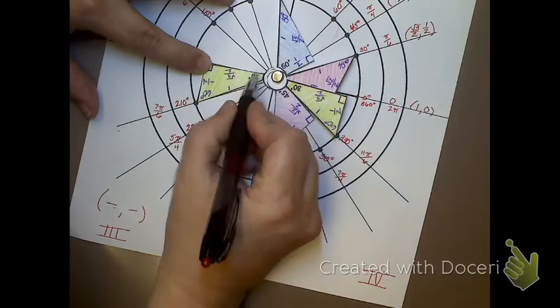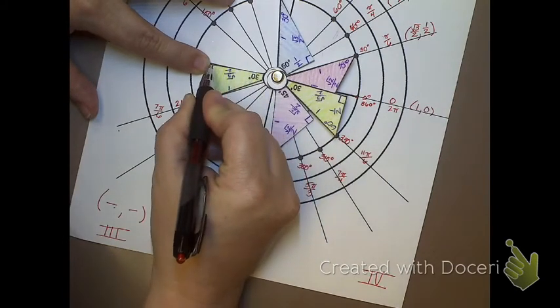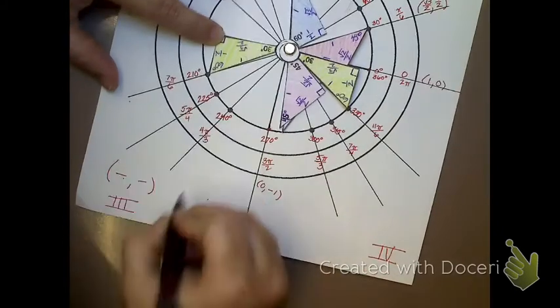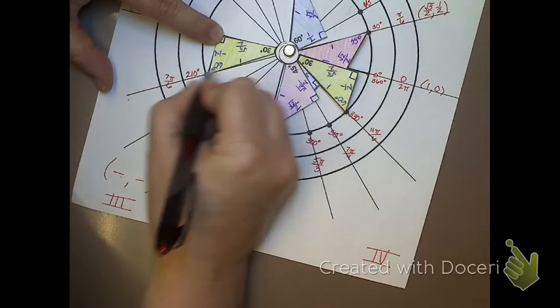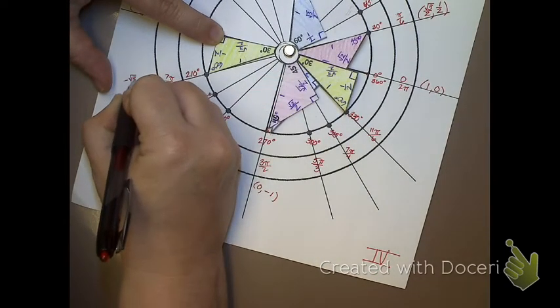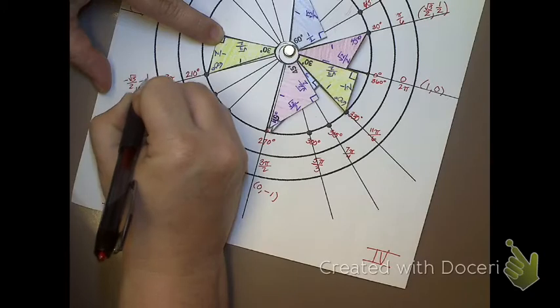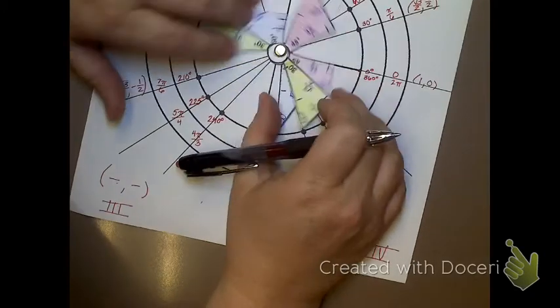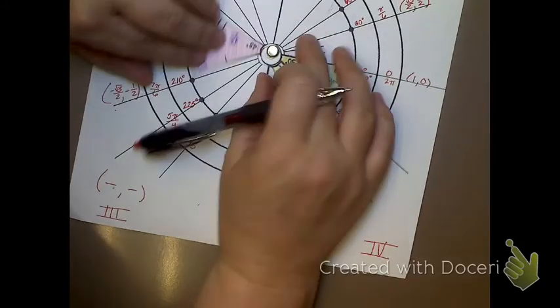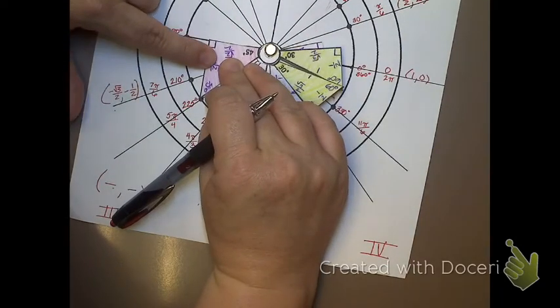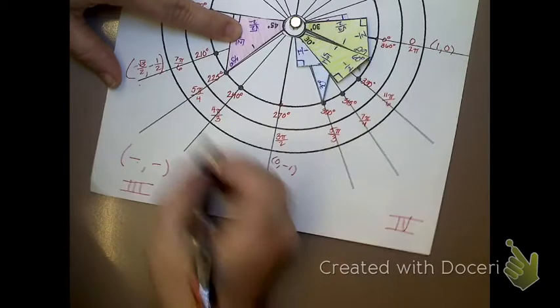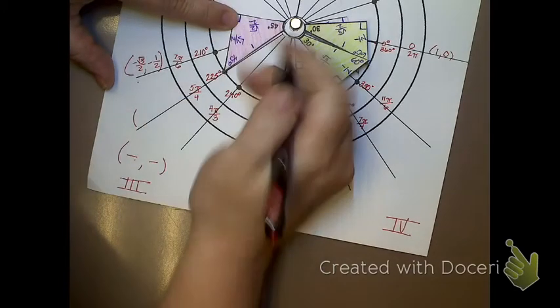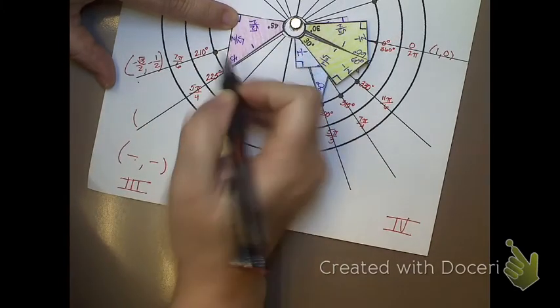Here's my first one. I have negative radical 3 over 2, negative one-half for this angle right here. Let's see what my next one would be. I need a red triangle, 45, 45, 90, right angle on the x-axis. I have negative radical 2 over 2, negative radical 2 over 2.